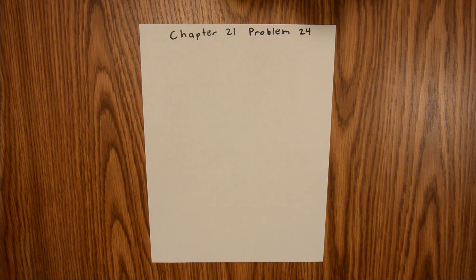Chapter 21 is all about Coulomb's Law. In Problem 24 we have two water droplets and we are asked to find the magnitude of the electrostatic force between them and how many excess electrons are on each drop.